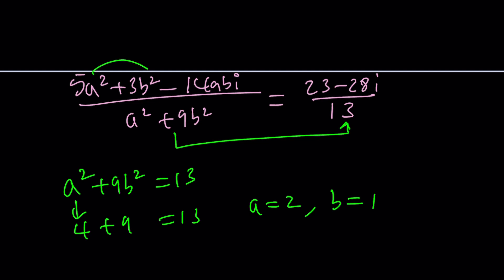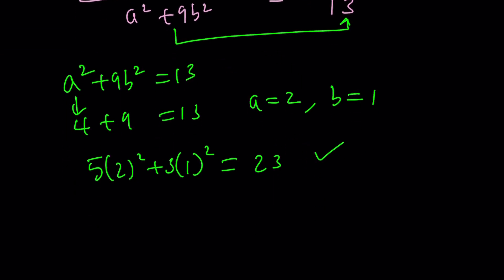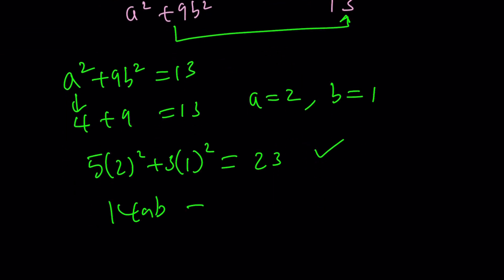If a is 2 b is 1, 5 times 2 squared plus 3 times 1 squared is going to be 23. So that checks. And 14ab will be 28. That checks as well. Nice!